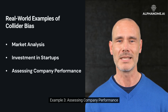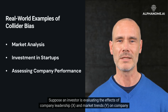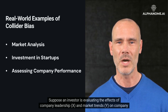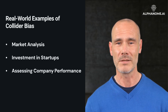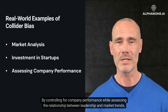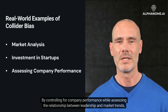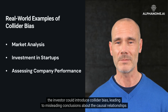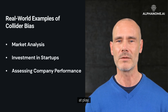Example 3: Assessing Company Performance. Suppose an investor is evaluating the effects of company leadership (x) and market trends (y) on company performance (z). By controlling for company performance while assessing the relationship between leadership and market trends, the investor could introduce collider bias, leading to misleading conclusions about the causal relationships at play.